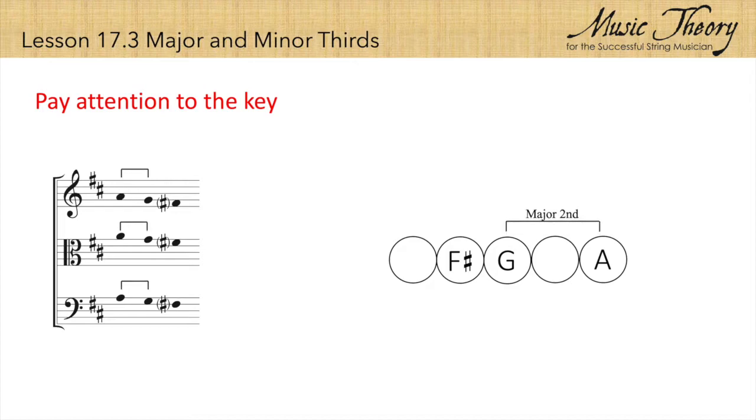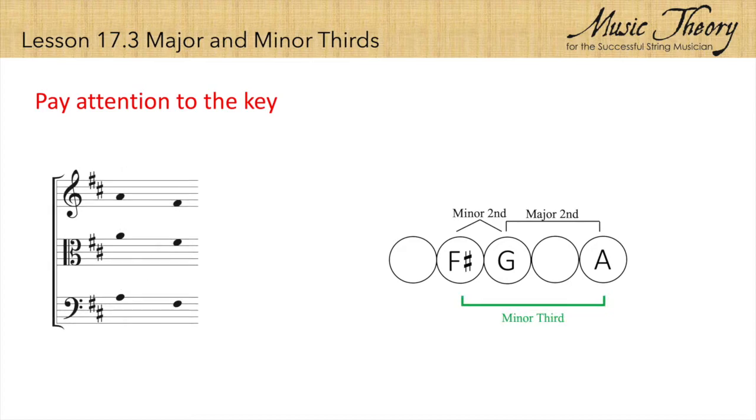Now, A down to G is a major second and G down to F sharp is a minor second. A major second plus a minor second equals a minor third. So we know that A down to F sharp is a minor third.